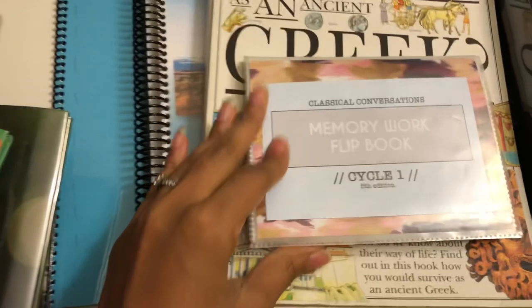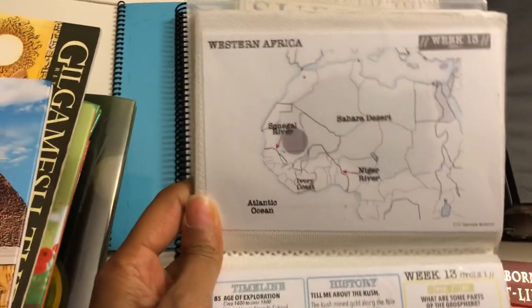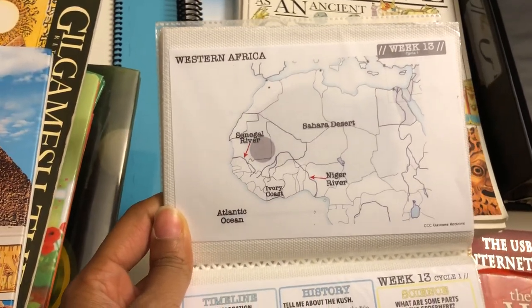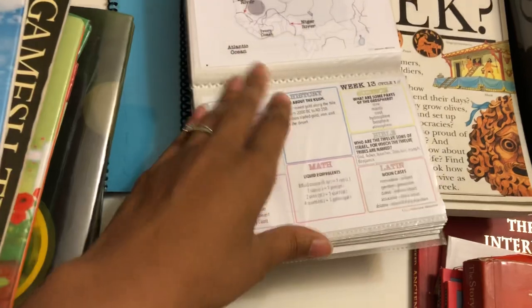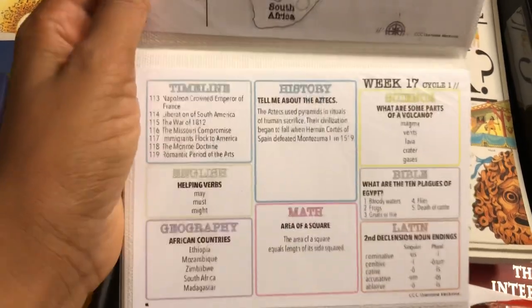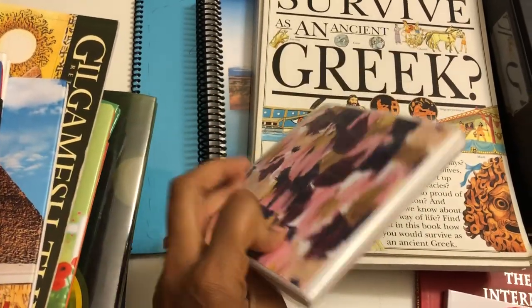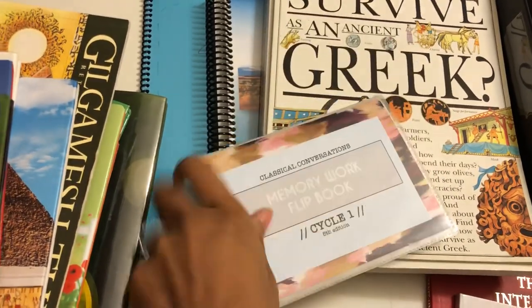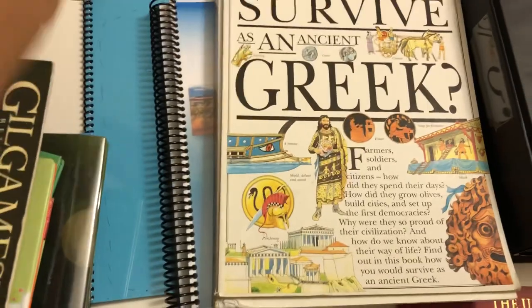I do have a little tiny memory work flip book. It's exactly the same thing I just had, except in a smaller format — just the cycle that we're on right now. Whether you are part of CC or not, you can pay and access CC Connected, which is where this came from. It gives you your map and everything broken down. This is something we use daily. It's so simple and easy — you don't have to worry about spills or anything like that. You can just shove it in your bag or purse. It's perfect.